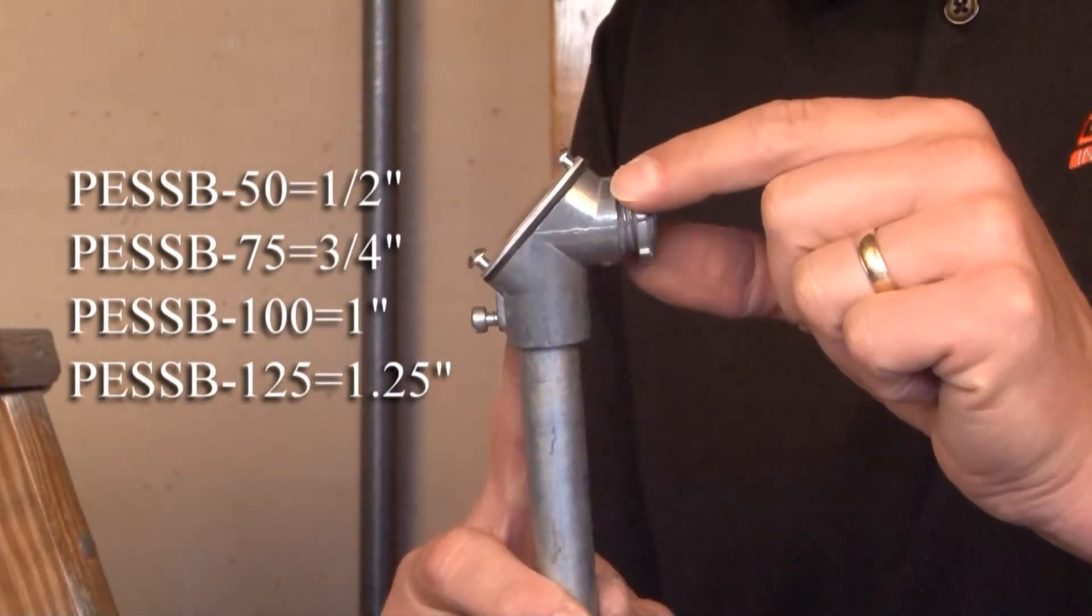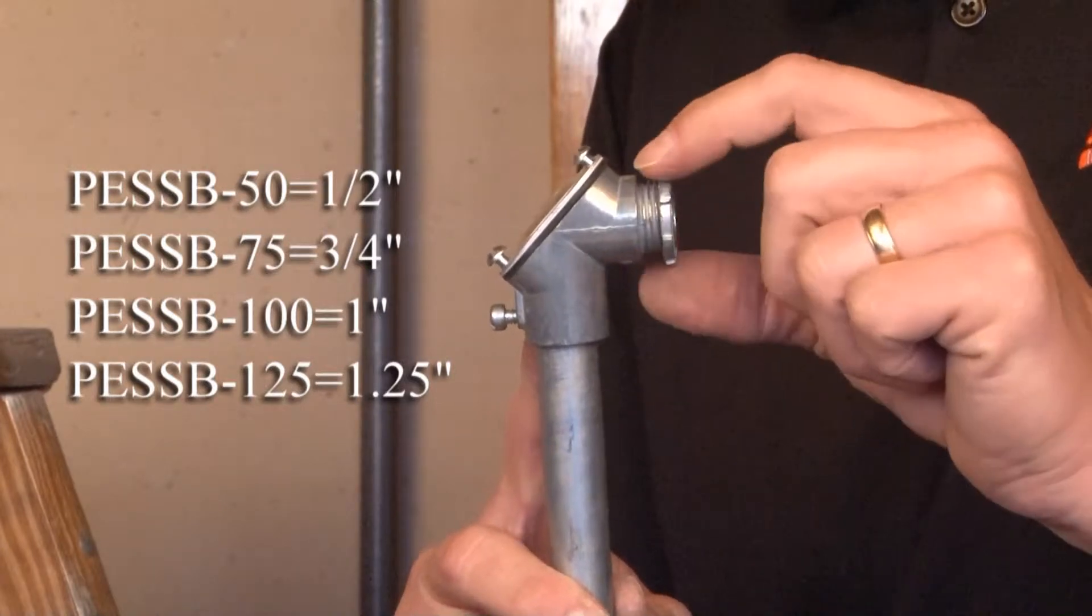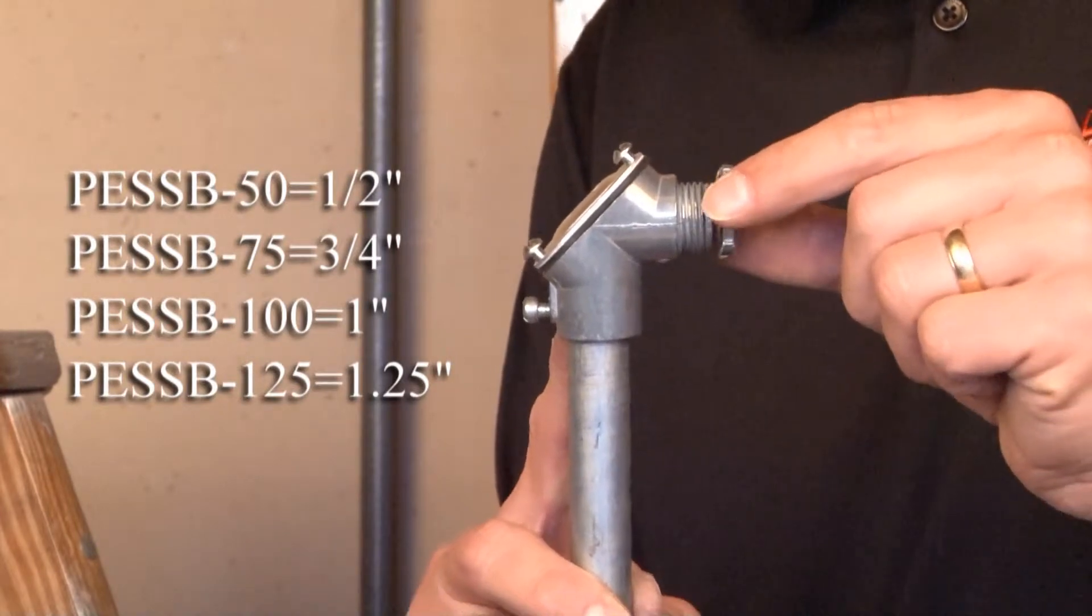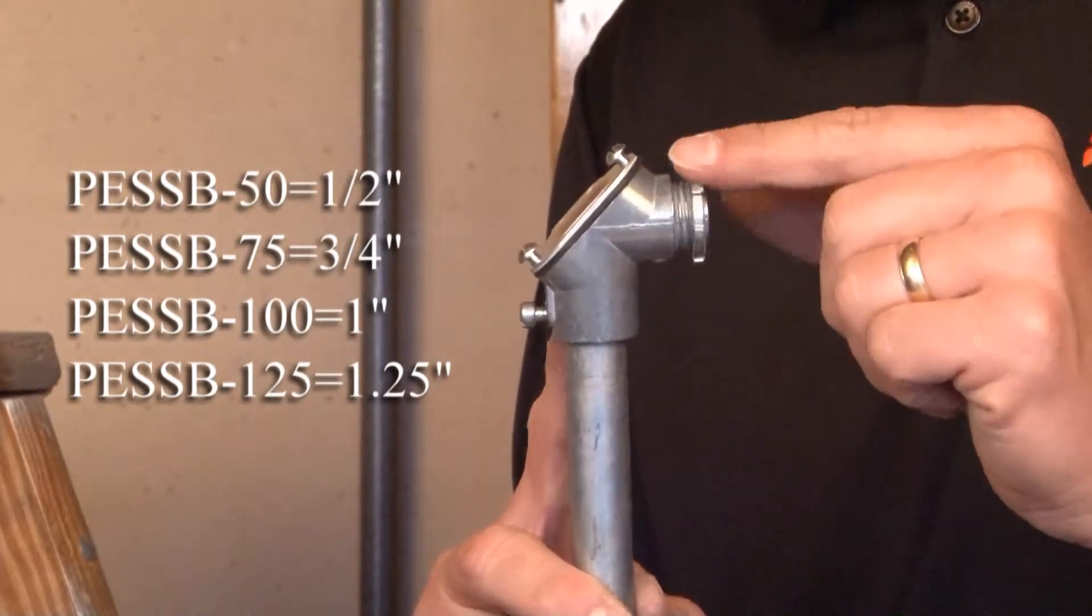To connect this 90 degree elbow to a box, you simply remove the lock nut, slide it into the box or enclosure knockout opening, and then re-tighten the lock nut on the inside of the box.